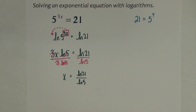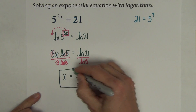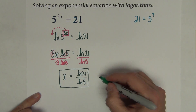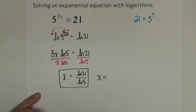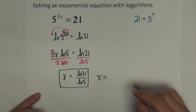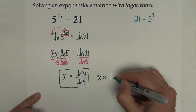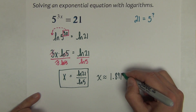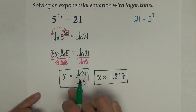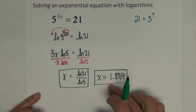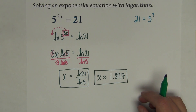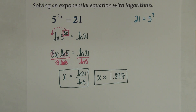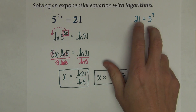If you want an exact answer, you have it. If you want an approximate answer, type natural log of 21 divided by natural log of 5 into your calculator. Using 4 decimal places, I get 1.8917. So whether you want an exact or approximate answer, we have both. That's the process whenever I can't make the bases match.